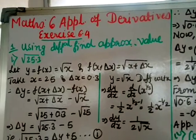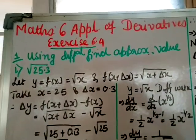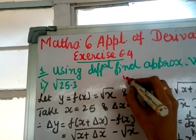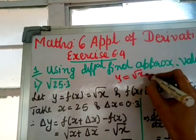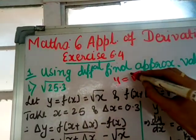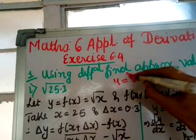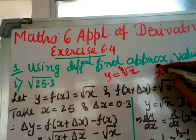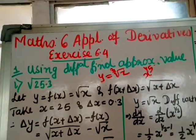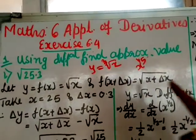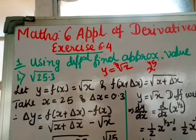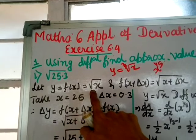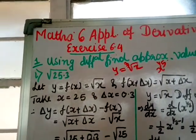They are not giving you the function, so first you have to define the function. You have to find the square root, so define y = f(x) = √x. Suppose they asked for cube root, then define y = cube root of x. If they asked for x^(1/5), define y = x^(1/5). Whatever root is asked, you define accordingly.